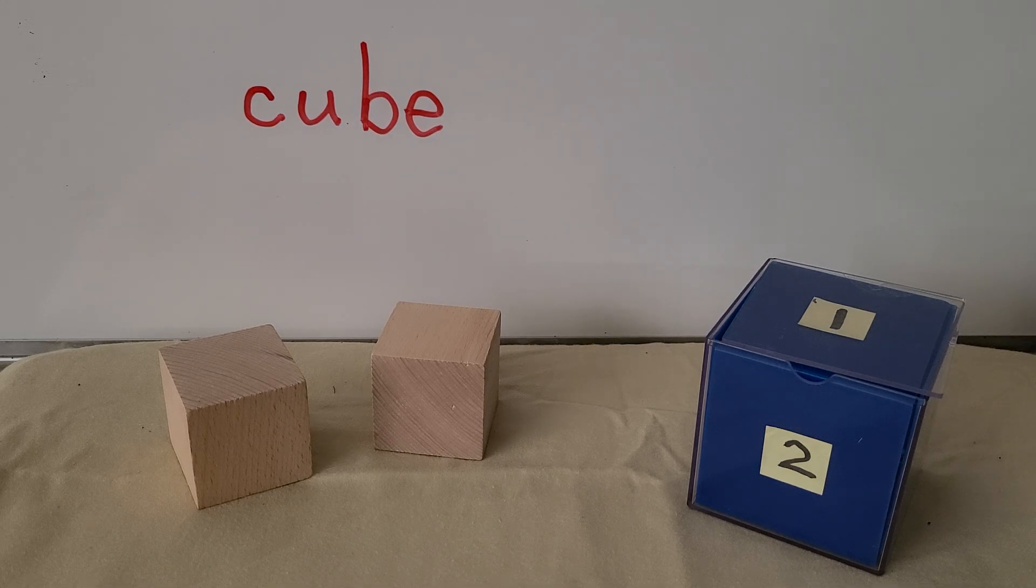So remember, cubes have six flat square surfaces that are all the same size. And they can stack to make a tower. And they can slide on one of their flat surfaces.